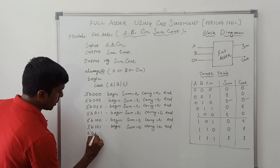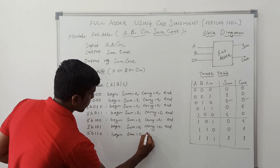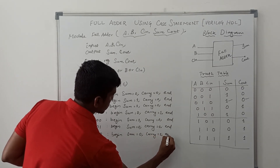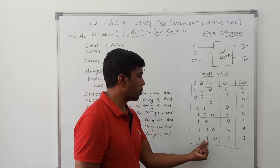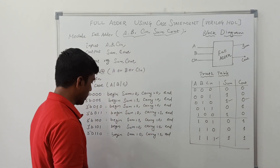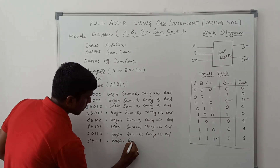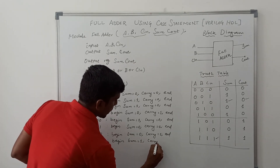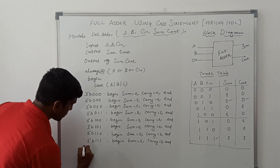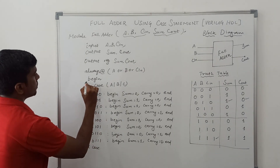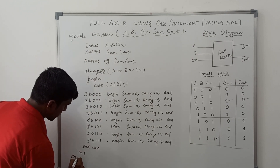The next input 3'b110, begin: Sum = 0, Cout = 1. End. So the final input 3'b111 — all 3 variables are 1, the corresponding output is Sum = 1 and Cout = 1. Begin: Sum = 1, Cout = 1. End. Now we close the case statement — endcase. Then we close the begin statement — end. Finally, close the module with endmodule.